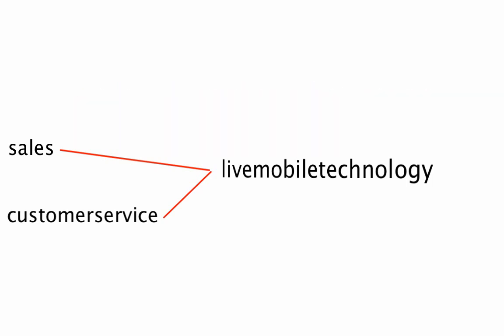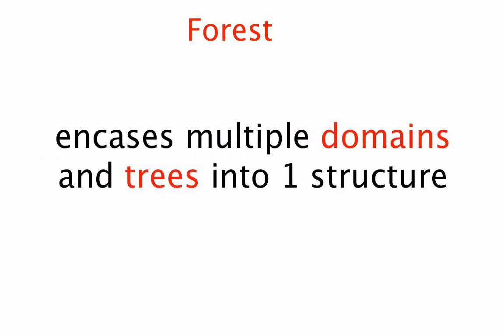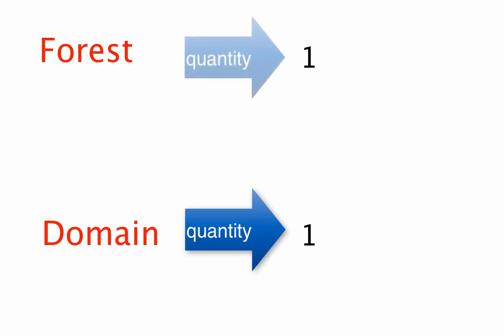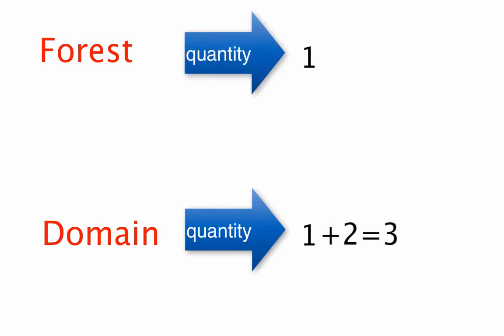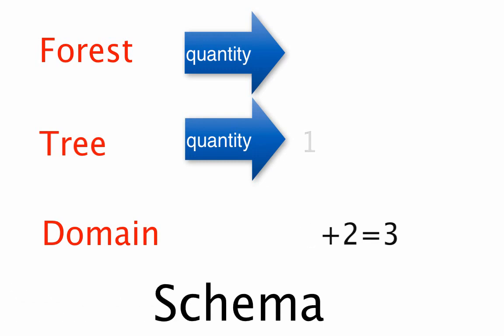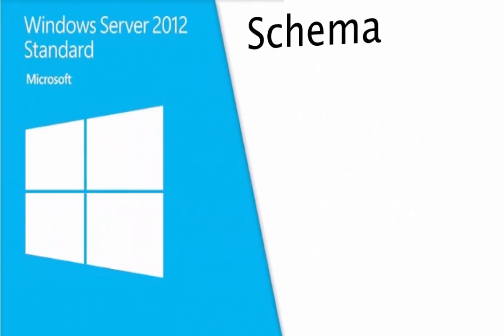There's one structure that links all these together — it's called a forest. A forest encases multiple domains and trees into one structure. You don't have to have multiple domains and trees to have a forest. As soon as you create your first domain, a forest is automatically created for that domain. When I added two child domains to Live Mobile Technology, these now form a tree in the forest. All domains in a forest have something in common — that is, they share what is called the schema. In the next video, we will review the schema and trust between multiple domains and trees in a forest.